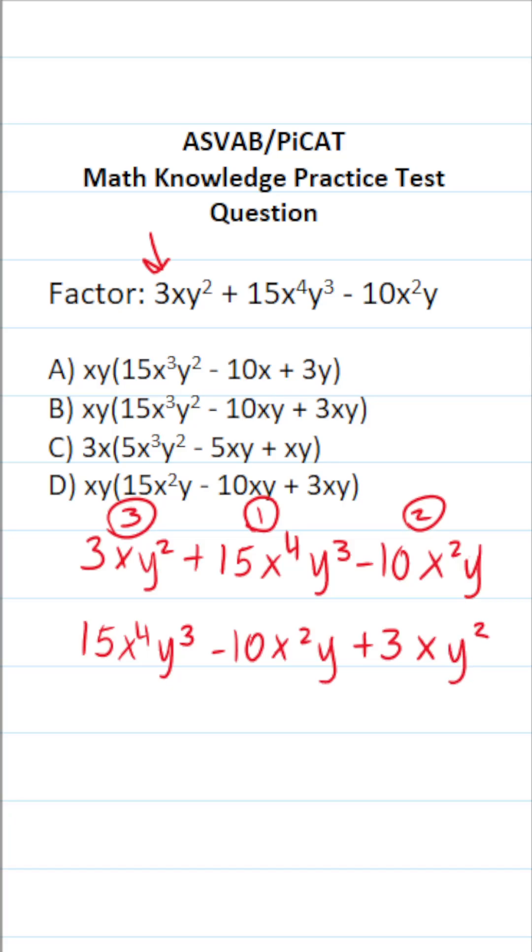Now let's talk about how we're going to factor this expression. Let's start by looking at the coefficients, notably 15, negative 10, and 3. As it happens, there is no number that all three of those have in common. So we can't factor anything out there.